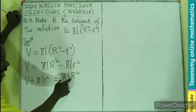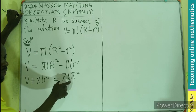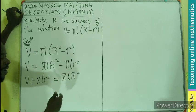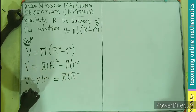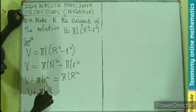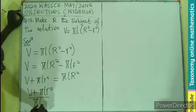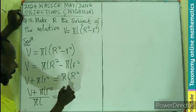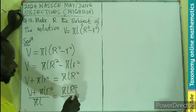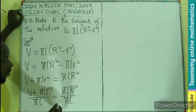We need to free the R again from these terms. These are multiplying, so we divide. It's going to be V plus π L r square divided by π L equals to π L capital R square divided by π L.